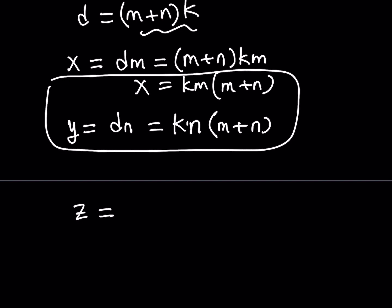So, let's go ahead and write z like x and y. So, we can do that basically. Z was dmn divided by m plus n. And remember, our starting point was that m plus n divides d. So, d is a multiple.